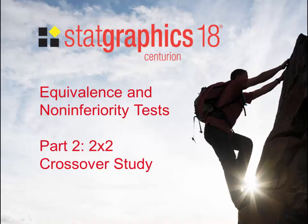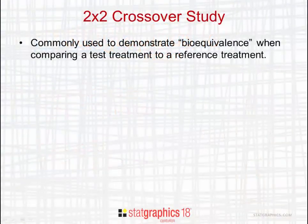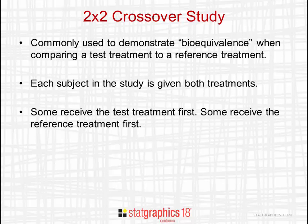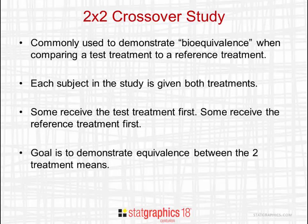This video is part two of a discussion of equivalence and non-inferiority tests. This part covers two-by-two crossover studies, which are commonly used to demonstrate bioequivalence when comparing a test treatment to a reference treatment. Each subject in the study is given both treatments — some received the test treatment first, the rest received the reference treatment first. The goal is to demonstrate equivalence between the two treatment means.